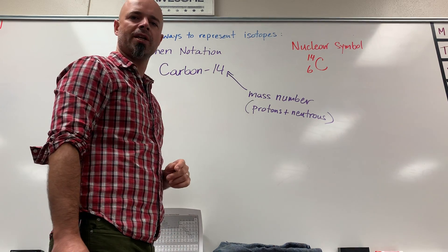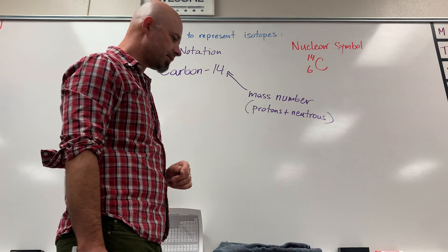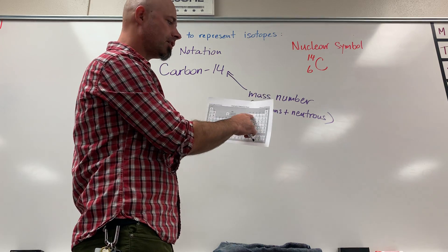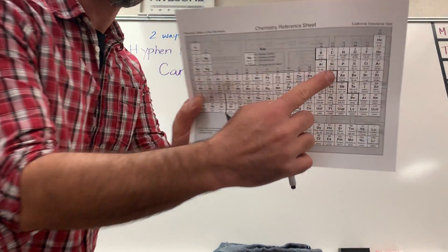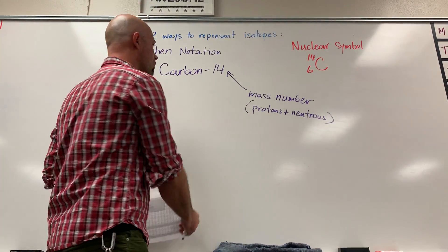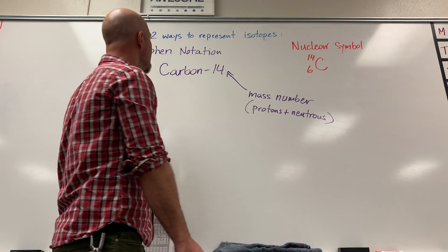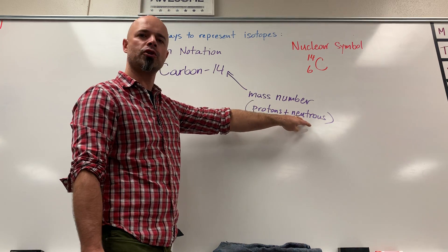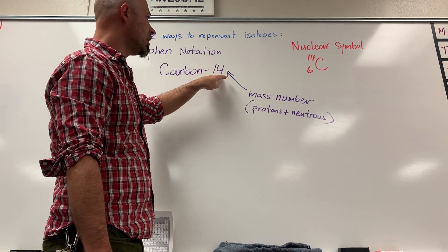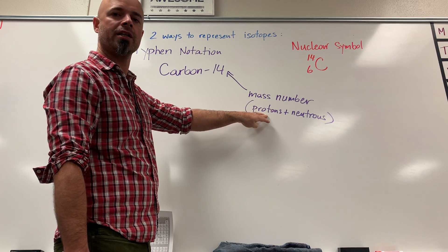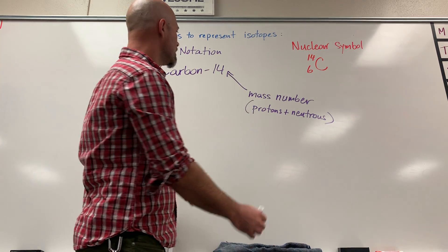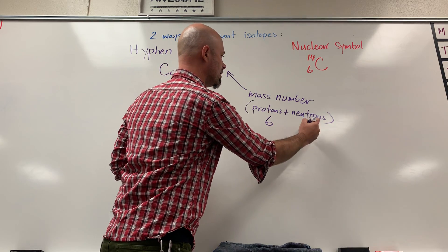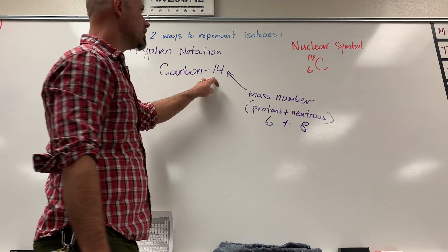You're not given the atomic number or the number of protons, but you can easily look that up in the periodic table and find that carbon is six. So that's the hyphen notation. If you want to figure out the number of neutrons, you take the 14, look up the atomic number in the periodic table, and subtract — since the protons are six, the neutrons have to be eight, and that adds up to 14.